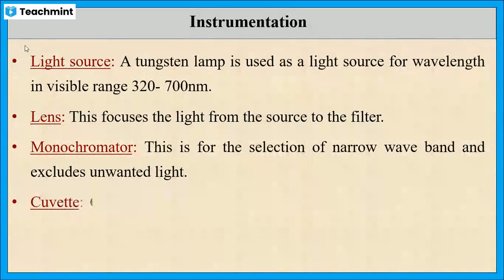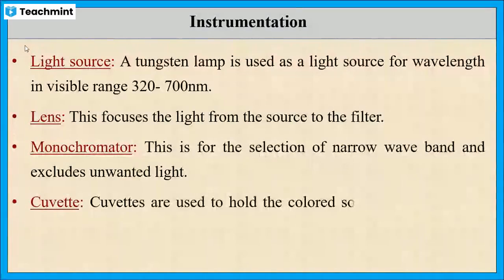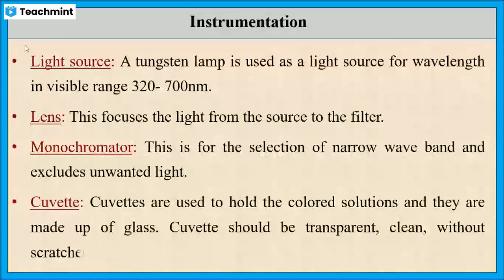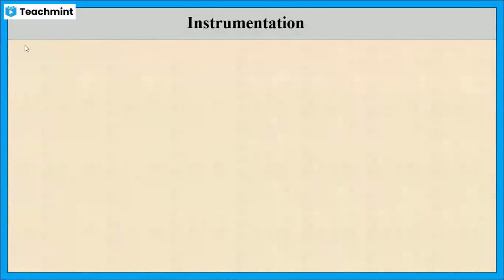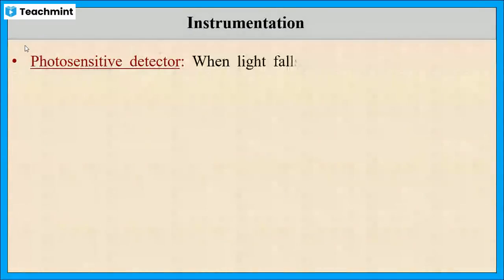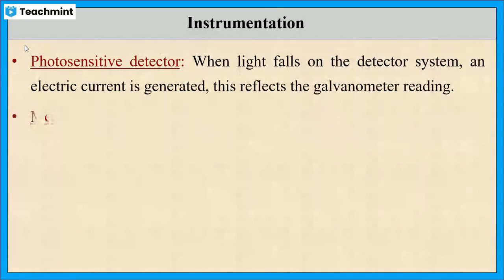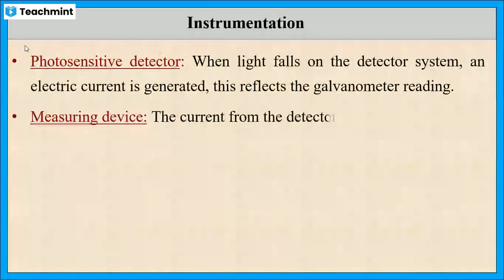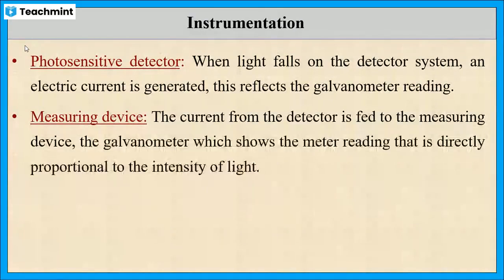A sample holder, or cuvette, is used to hold the colored solution. The cuvette should be transparent, clean, and without scratches. The photodetector converts the emitted light into an electrical signal, which is measured using a galvanometer and amplified in the amplifier.